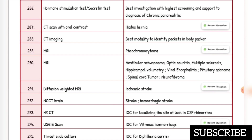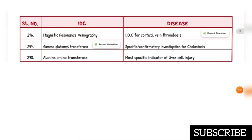Ischemic stroke: investigation of choice is diffusion-weighted MRI. Hemorrhagic stroke: investigation of choice is NCCT brain. Investigation of choice for localizing site of leak in CSF rhinorrhea is HRCT. Investigation of choice for vitreous hemorrhage is ultrasound B-scan. Investigation of choice for diphtheria carrier is throat swab culture — recent question. Investigation of choice for cortical vein thrombosis is magnetic resonance venography. Specific confirmatory investigation for polycystic liver disease is gamma-glutamyl transferase.